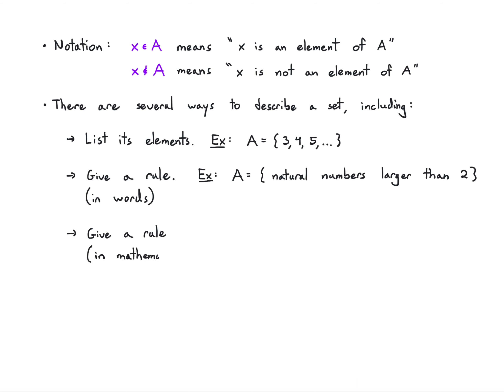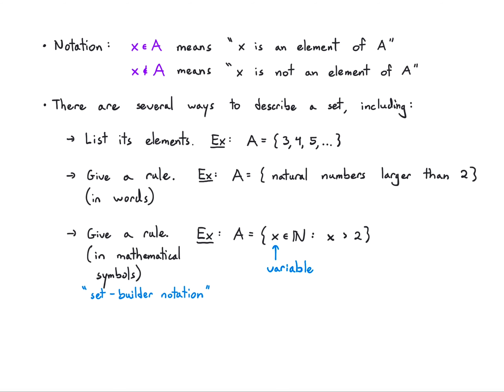But one thing you might not have seen is how to do this mathematically, using some formal notation. We're going to need notation for the natural numbers — that's going to be N with a line through it. So I say: x from the natural numbers such that x is greater than two. This is called set builder notation. It contains a variable (in this case, x), a universal set (the natural numbers), and a condition. The colon means 'such that.' So the set A is {x from the natural numbers such that x is greater than two}.